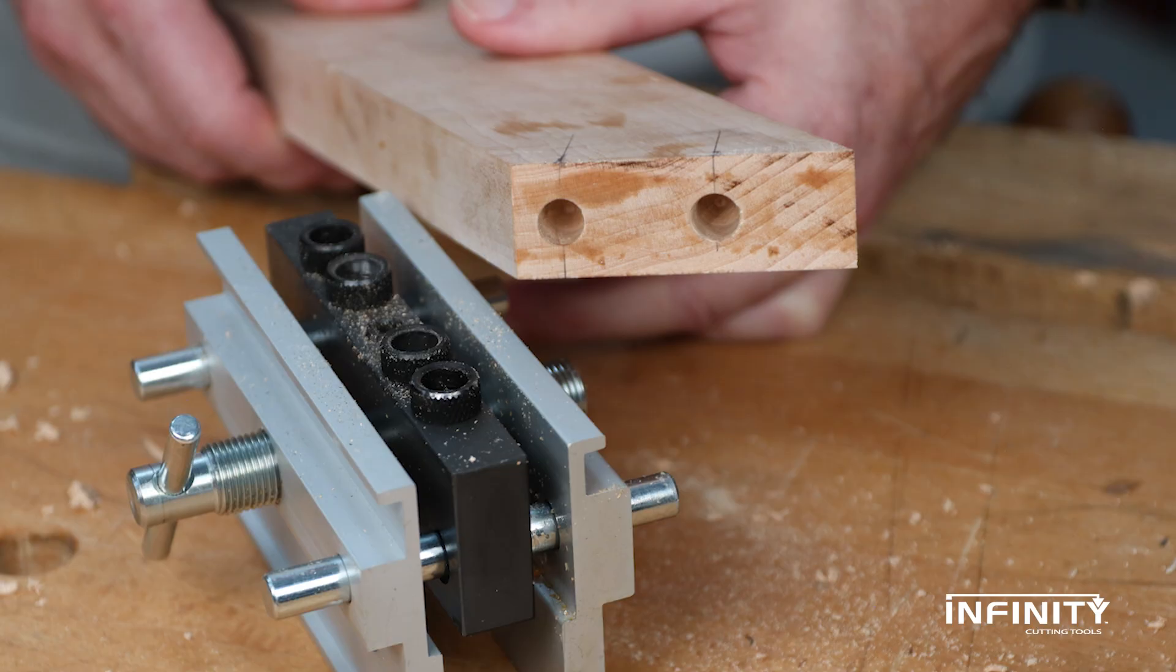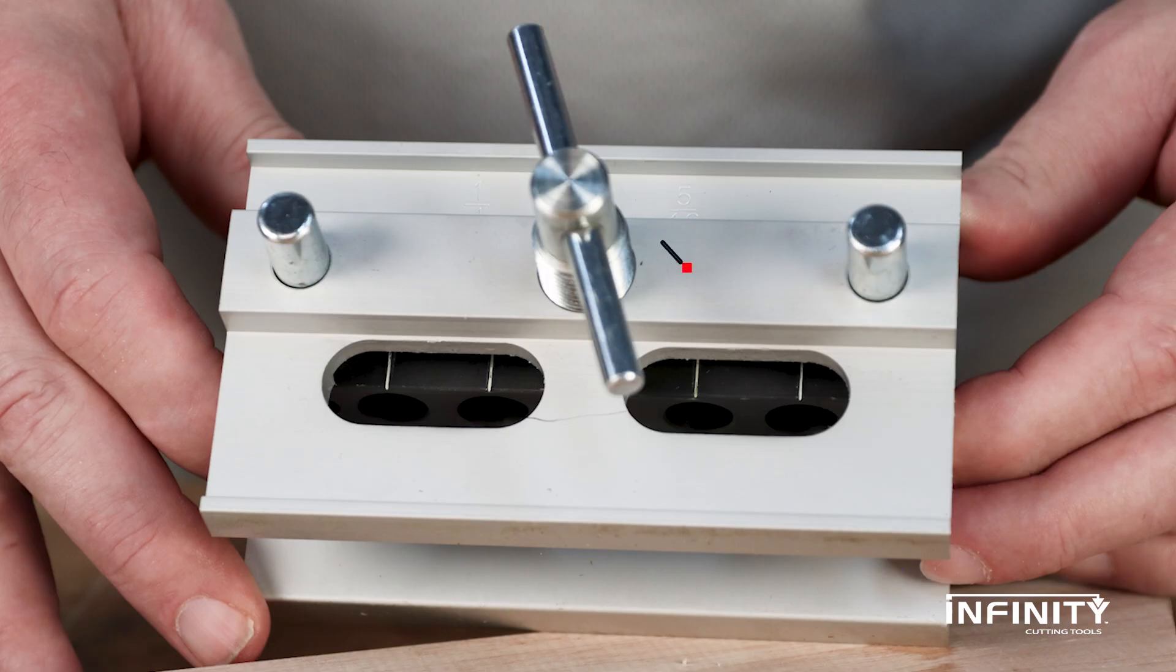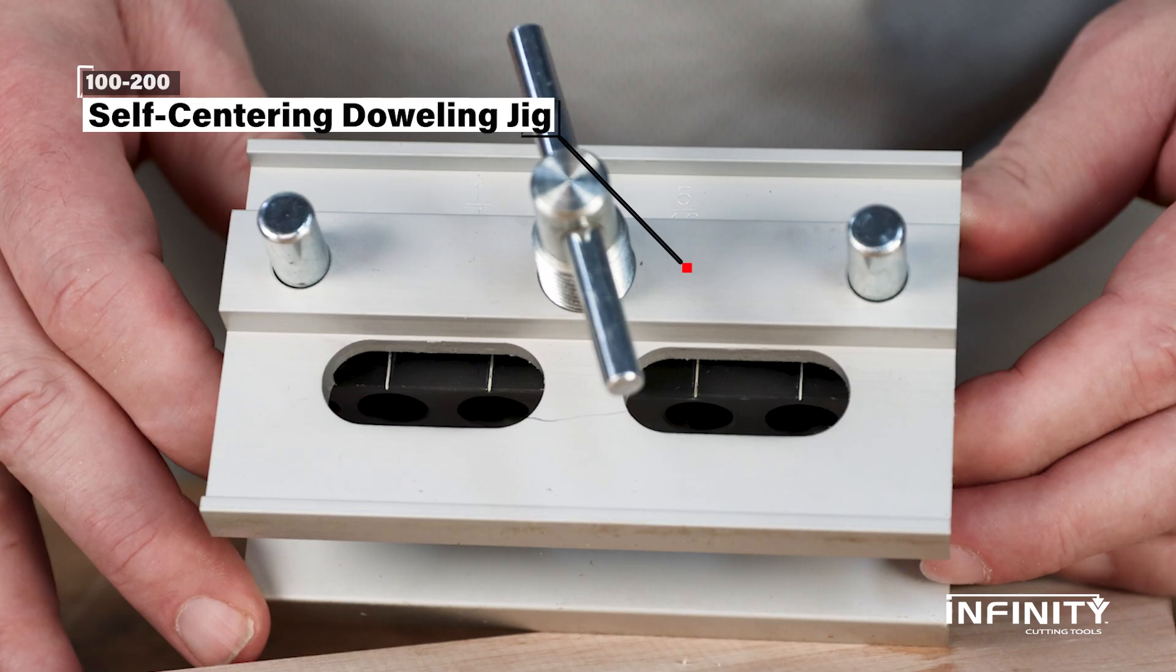Because dowel hole tolerances are so tight, we need to make the mating holes match up as closely as possible. Our self-centering dowelling jig takes all the guesswork out of properly milling your holes.